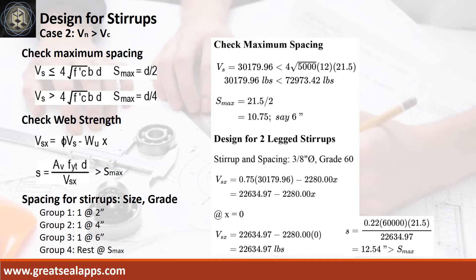Maximum spacing is 6 inches, the shear force at face of support is 22,634.97 pounds, and initial spacing at 12.54 inches. The stirrup spacing are as follows: 1 at 2 inches, 1 at 4 inches, rest at 6 inches.